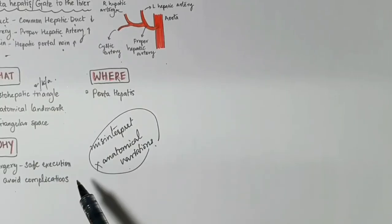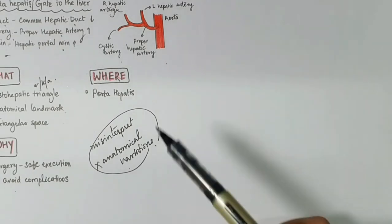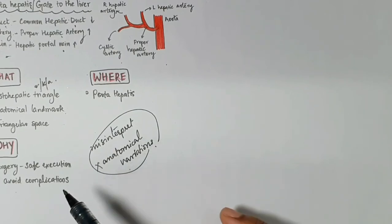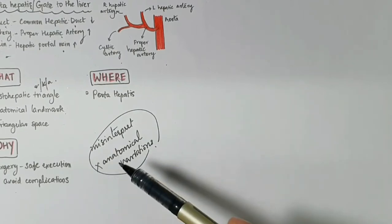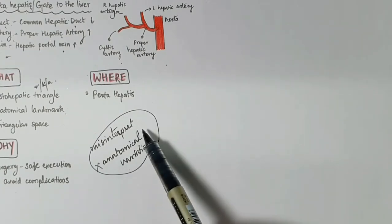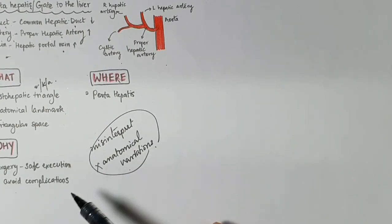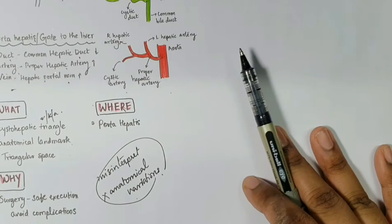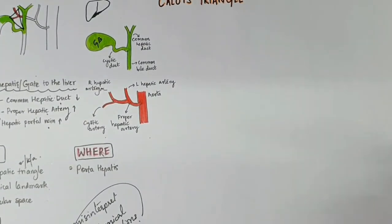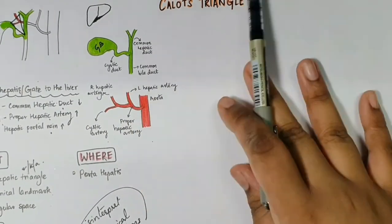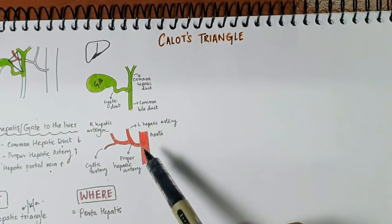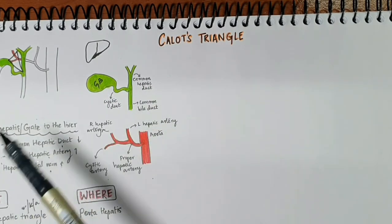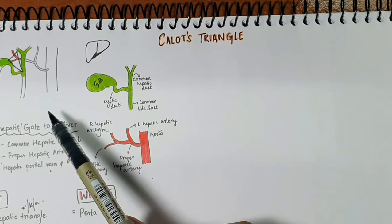Why do we need to know about the Calot's triangle? Because when performing surgery, we need to safely execute it and avoid complications. If you misinterpret what exists in an area or fail to recognize anatomical variations, these could prove disastrous. For example, during a laparoscopic cholecystectomy — removal of the gallbladder laparoscopically — one of the most serious complications is injury to the common bile duct. You need to know what structures lie in the Calot's triangle and how they traverse.